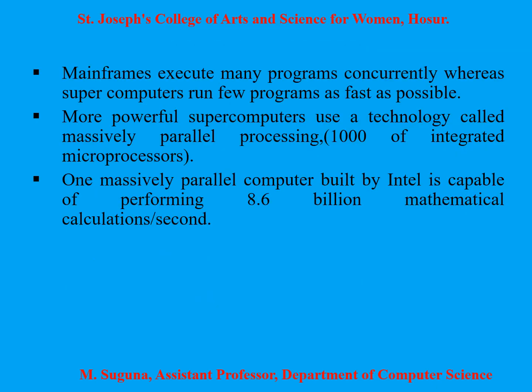Mainframes execute many programs concurrently, whereas supercomputers run few programs as fast as possible. More powerful supercomputers use a technology called massively parallel processing — that is, thousands of integrated microprocessors. One massively parallel computer built by Intel is capable of performing 8.6 billion mathematical calculations per second.